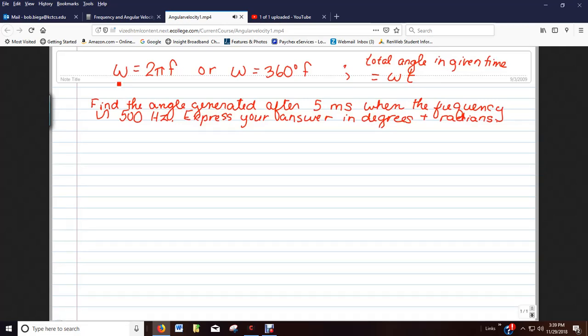Let's look at angular velocity. Let's remember angular velocity, or omega, is equal to 2 pi times the frequency, or if we're dealing with degrees, 360 degrees times the frequency. If we want the total angle in a given time, that is omega times t, our time.